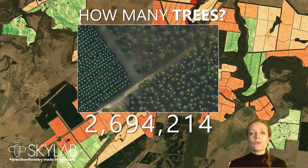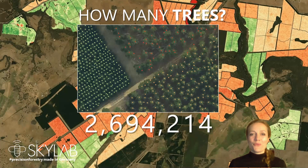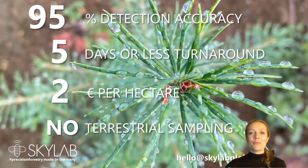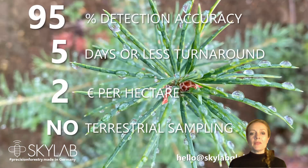We're also going to take a quick look at adult tree counting. This is an example from GTFP in the Australian Green Triangle, where they asked us to count all the trees in 2,800 hectares. We counted 2,694,214 — give or take 10. So, 50 million trees later, we think our algorithm has become really good, and we can pretty much guarantee that 95% or more of the seedlings visible in the aerial data will be detected and counted.